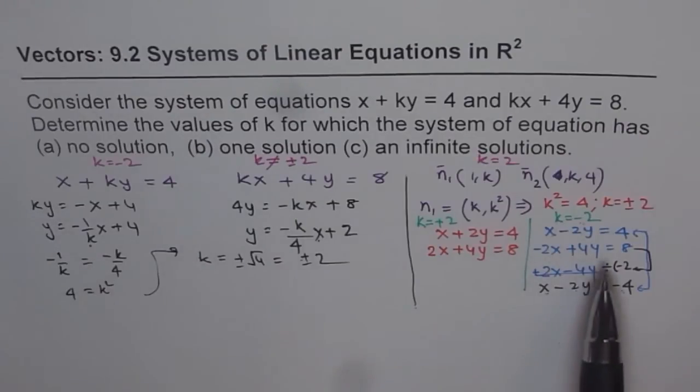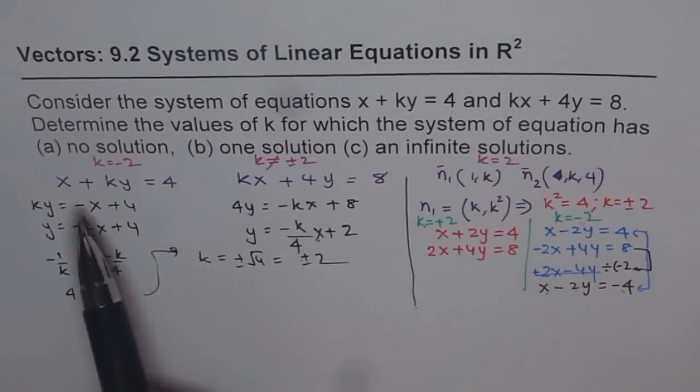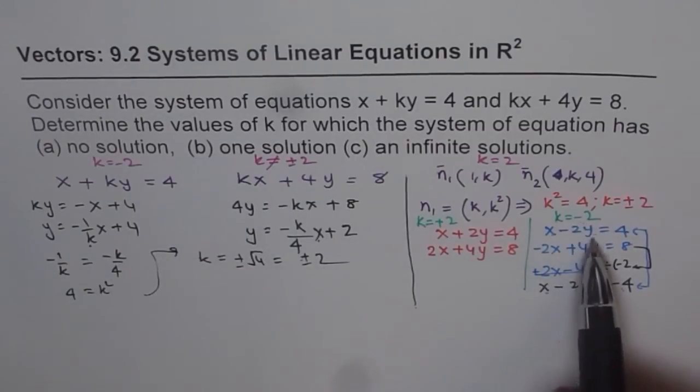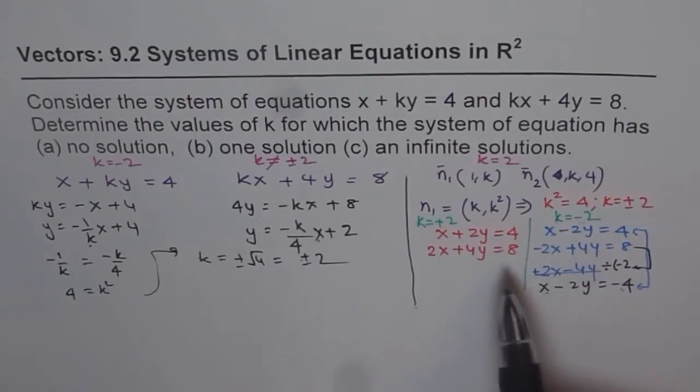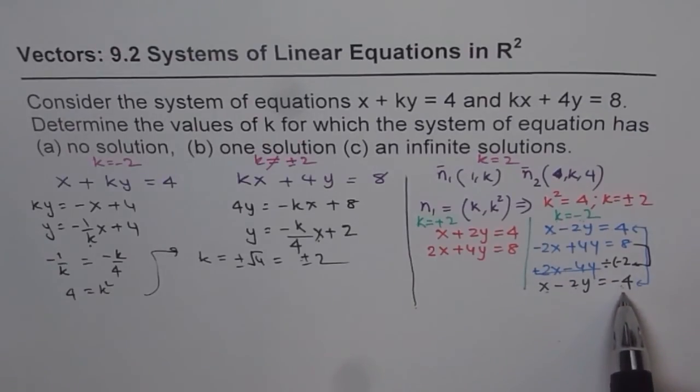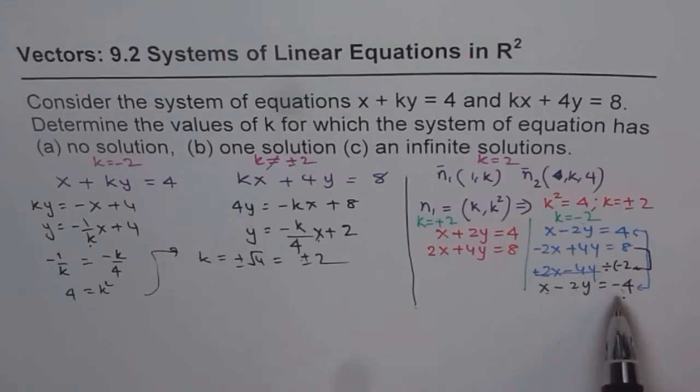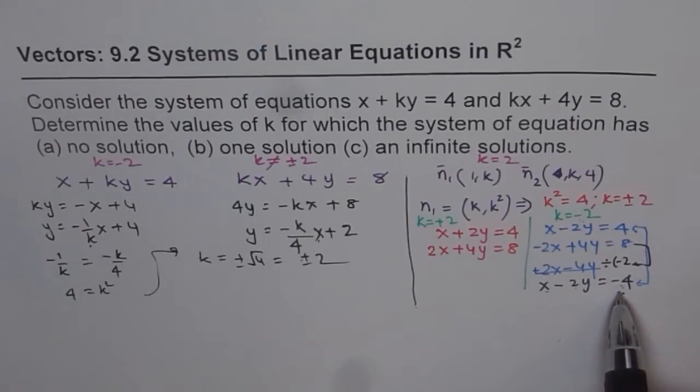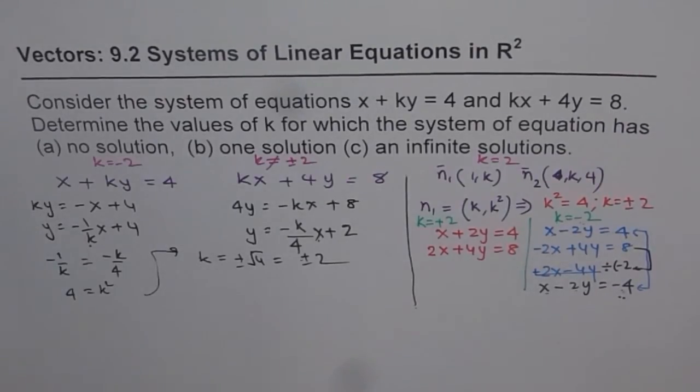You get k equals plus minus 2, and as we did here, you can check with plus 2 what equations you get. With minus 2, you get the other set of equations. These are exactly the same equations, and therefore you get infinite solutions, and these are with same slope, different intercept. And therefore, parallel equations with no solution.